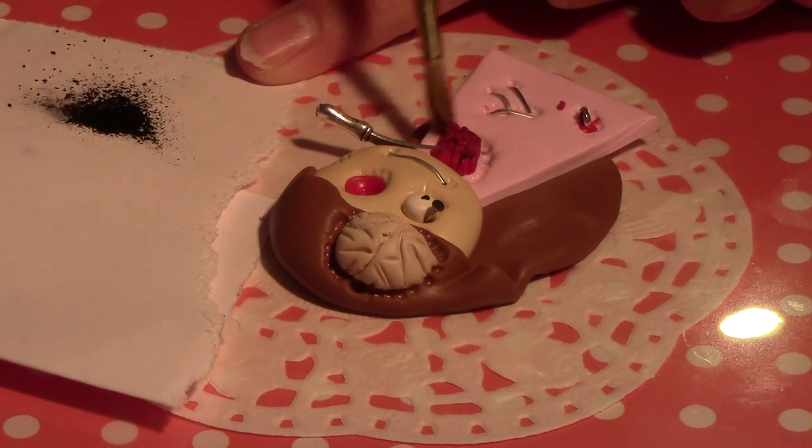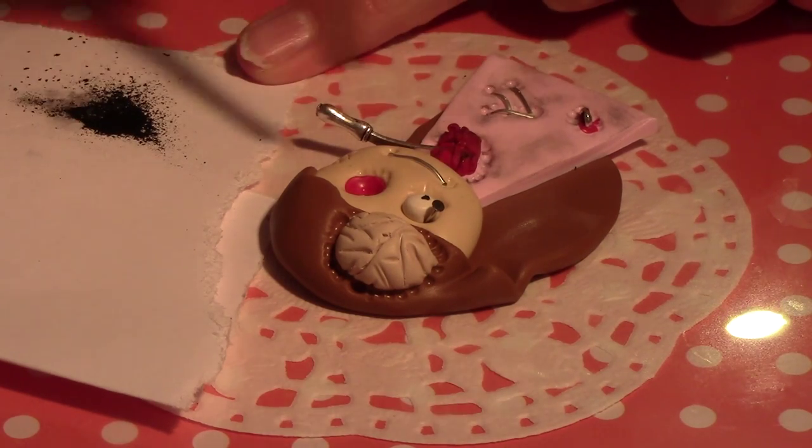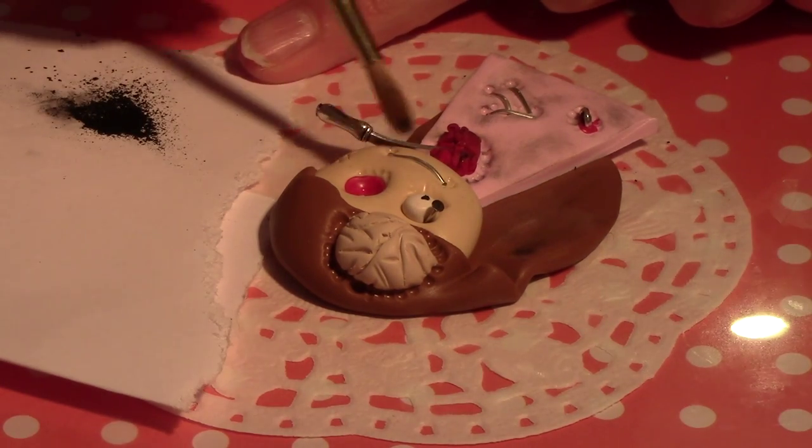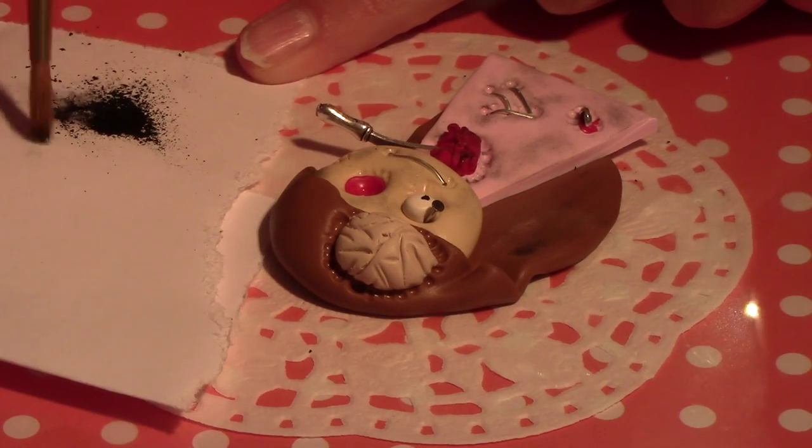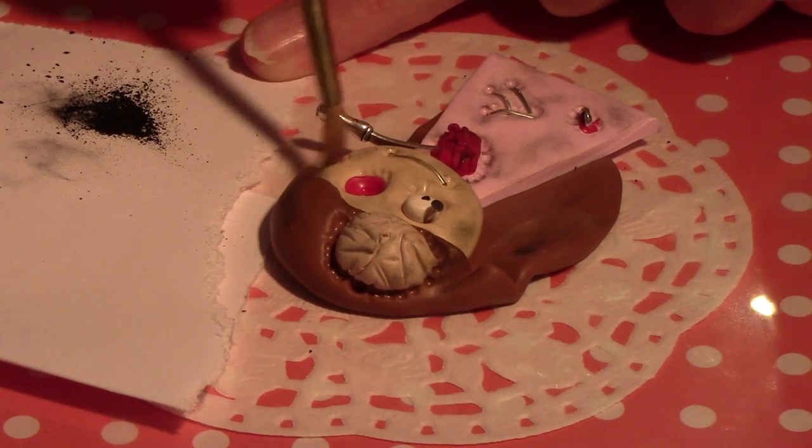Now we'll give the dirty, aged effect. What we just made is really too clean. I do exactly the same technique I did previously for the heart. I take black pastel and my brush and pass some all over my character.